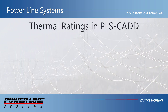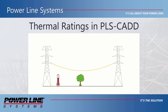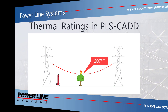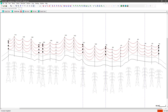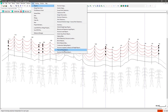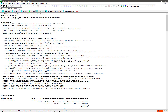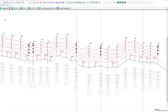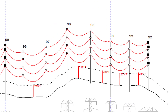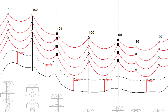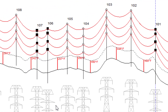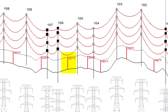The first step in attaining these ratings is to find the maximum conductor temperature a line can be operated at before a limiting clearance issue is found. This can be done via the Lines Reports thermal rating report feature in PLSCAD, which continuously increases the wire temperature until a violation is found in every span of the line. Traditionally, the lowest temperature found would be the thermal rating for the line. For more information on performing thermal rating reports in PLSCAD, please refer to the technical note posted in the video description below.